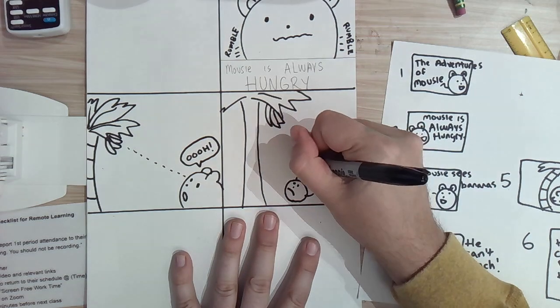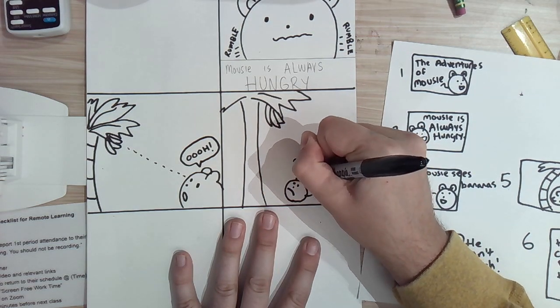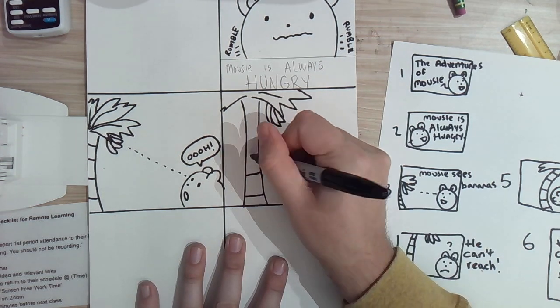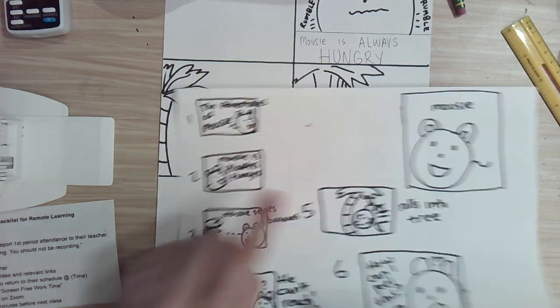And I'll draw a mousey. Looking sad because he can't get there. I'll give him some question marks so that he's thinking, how am I supposed to get those? The mouse rolls into the tree.